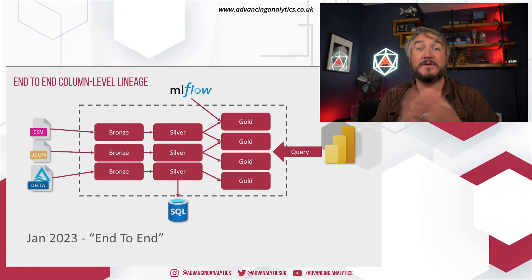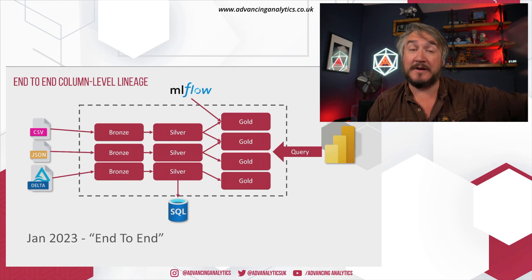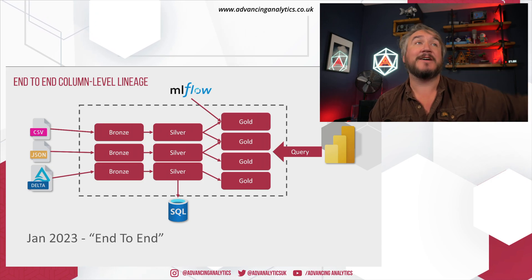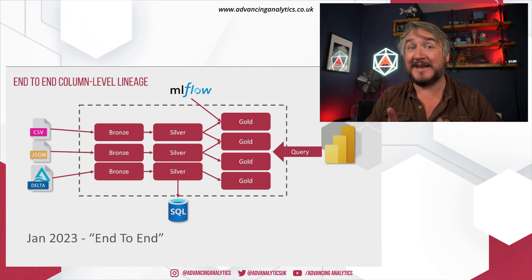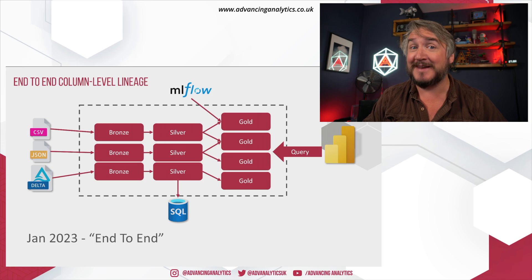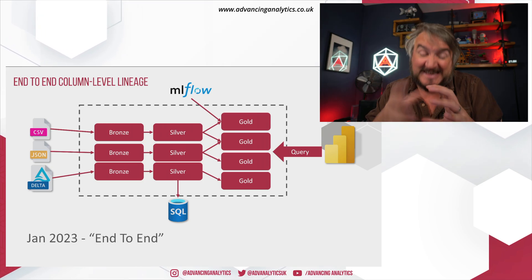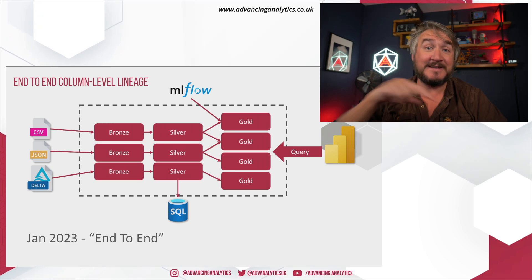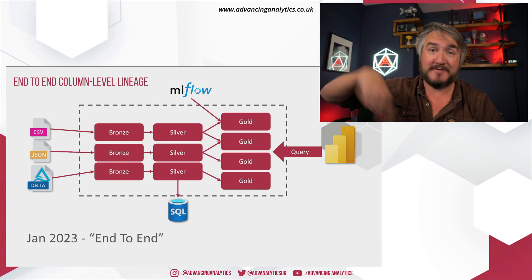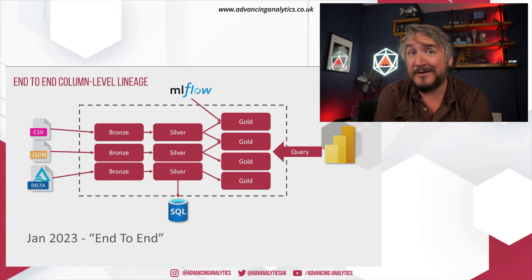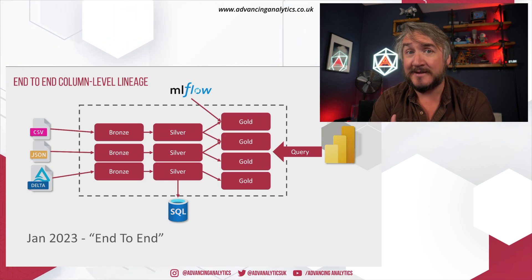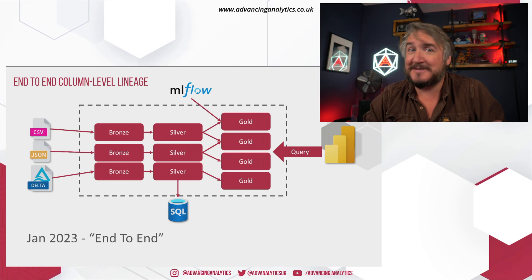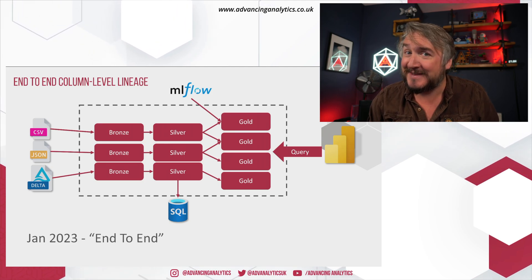So if you've been using Unity Catalog for a little while, at the start of the year we were saying it's great at looking at delta tables within Databricks — and that's it. Any time we leave that ecosystem, Unity Catalog doesn't know what's going on, and we don't have lineage there. That's a problem if you're going to call it end-to-end.